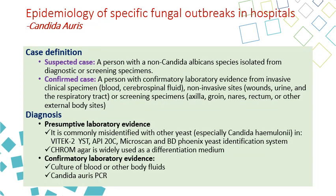For case definitions of Candida auris, there are two groups: suspected and confirmed. A suspected case is any patient with a lab result indicating non-Candida albicans Candida — since Candida albicans is the most common type, non-Candida albicans results should be assumed to be Candida auris. A confirmed case requires a lab confirmatory test result, whether from invasive clinical specimens like blood or CSF, non-invasive specimens like urine or wound, or screening specimens such as axilla and groin swabs, rectum, mouth, and ear canals.